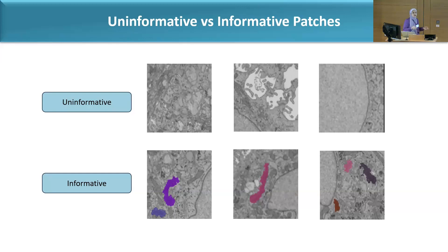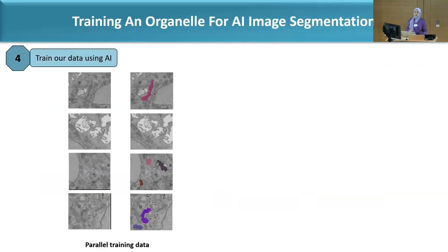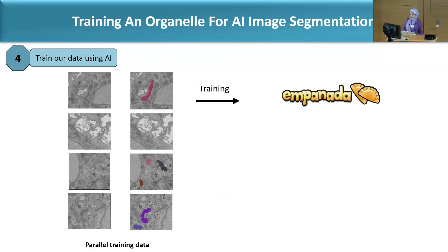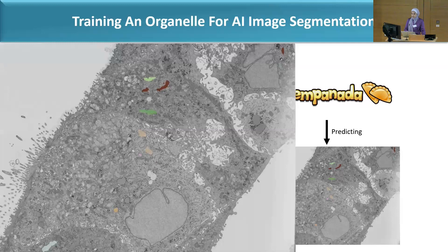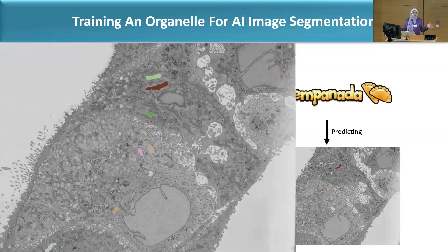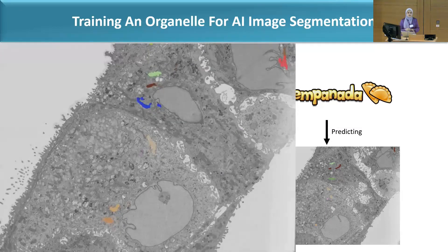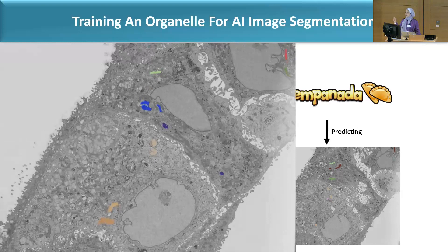We create two patch variations: informative patches containing the organelle segmentation of interest, and uninformative patches that do not. Having both with a specific ratio helps avoid over-segmentation or under-segmentation. The fourth step is training: patches from our volumes are fed into Empanada to train on our specified organelle and get the final prediction. This produced segmentation and prediction across almost 2,000 slices automatically, trained on only four to eight slices.